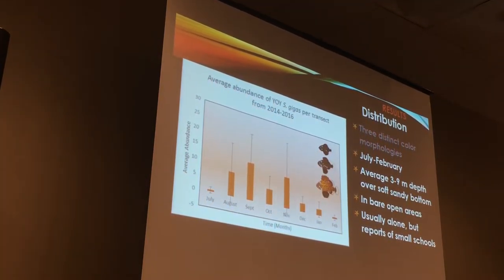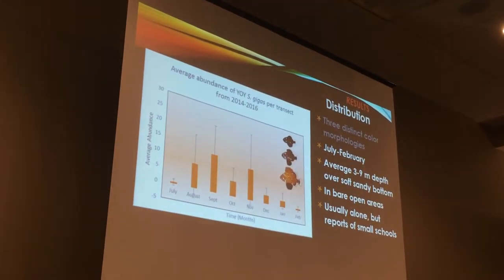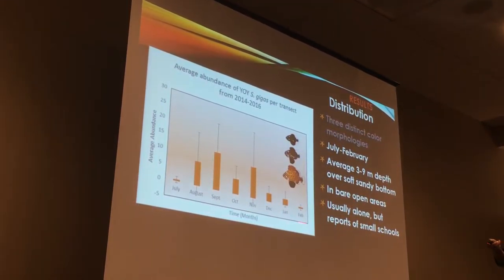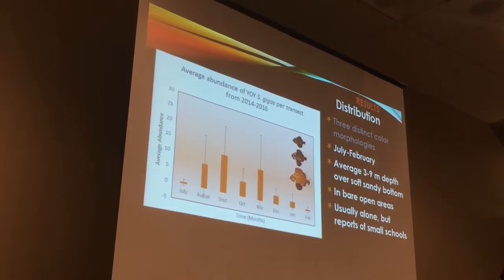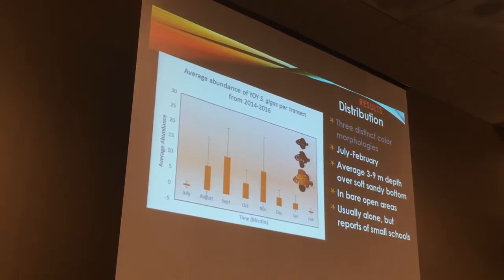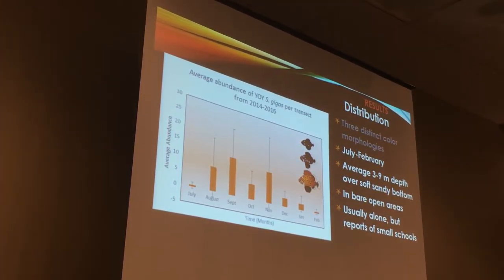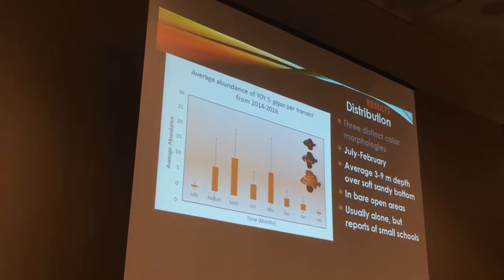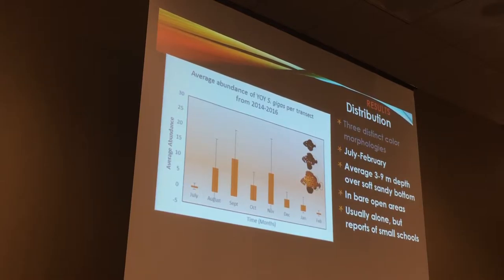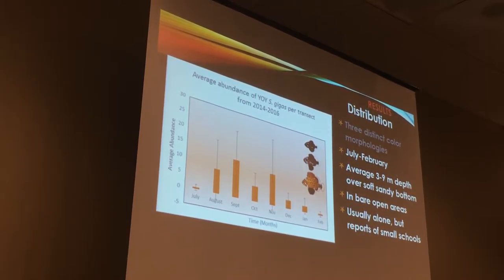We did find a very patchy distribution, which is interesting. We only found them July through February, with a peak in the early summer and early fall months. We only exclusively found them in sandy beach areas — not a shock because that's where we were looking — but we did find them in shallow waters, which confirms the previous literature. We only found them by themselves, although some citizen science data did have reports of small schools of individuals.